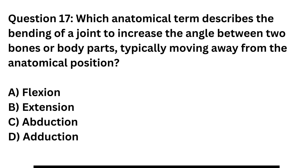Question 17. Which anatomical term describes the bending of a joint to increase the angle between two bones or body parts, typically moving away from the anatomical position? A. Flexion. B. Extension. C. Abduction. D. Adduction.